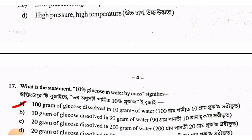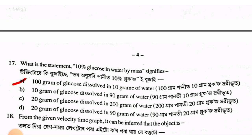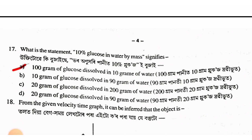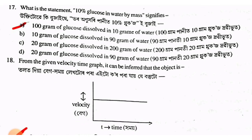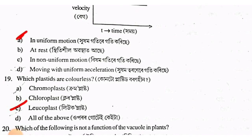10% glucose in water by mass signifies 10g of glucose in 100g of water. 10g of glucose is used. Which plastids are colorless? The answer is option C — leucoplasts.